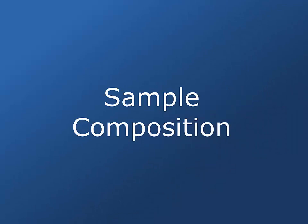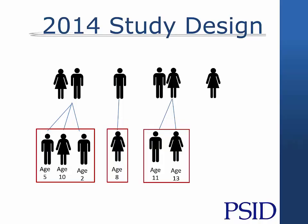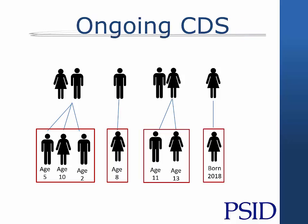Sample eligibility and composition for the ongoing CDS differs from the original CDS collected from 1997 to 2007. CDS 2014 included all children in the family unit aged 0 to 17 years old. All children born or adopted into PSID families since 1997 were eligible to be included in the 2014 wave if their family completed the 2013 core interview. Future waves of the ongoing CDS will include children born since the prior wave in order to create a steady-state panel that will be population representative of children in the cross-section while also allowing for longitudinal analysis.